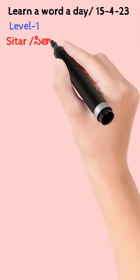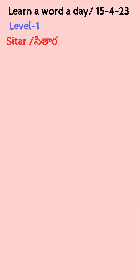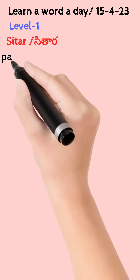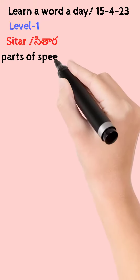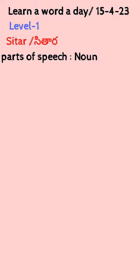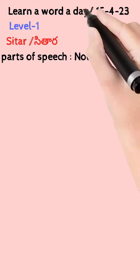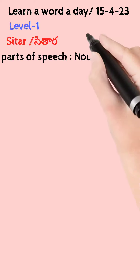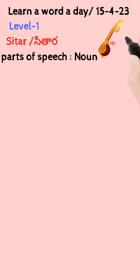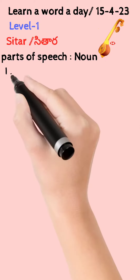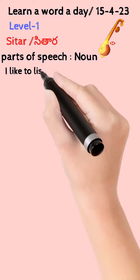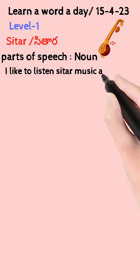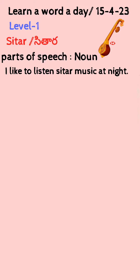First of all, level 1 word. Level 1 means classes 1 and 2. The word is sitar. Sitara. Parts of speech: noun. And its image. Now its usage: I like to listen to sitar music at night.